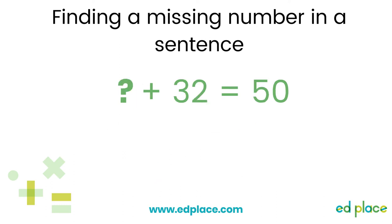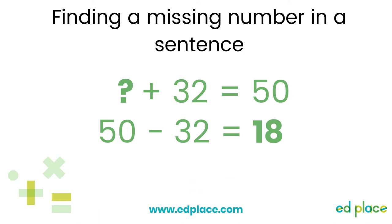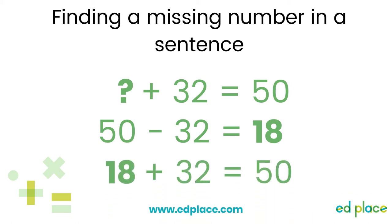Let's have a look at another one. A missing number at the beginning of the sentence means we should do the inverse. 50 take away 32 equals 18 — remember the largest number will go at the beginning of the subtraction sentence. Then we will use the missing number 18 in the original addition sentence: 18 add 32 equals 50.